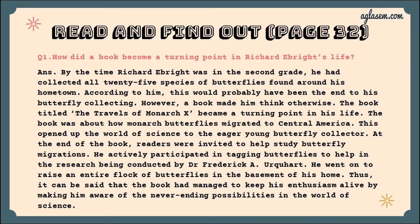Here on page number 32, the first topic is Read and Find Out. Question number one is: how did a book become a turning point in Richard Ebright's life? By the time Richard was in the second grade, he had collected all 25 species of butterflies found around his hometown. This would probably have been the end of his butterfly collection, however a book made him think otherwise. The book titled The Travels of Monarch X became the turning point in his life.